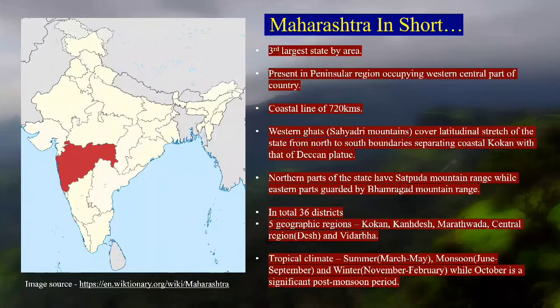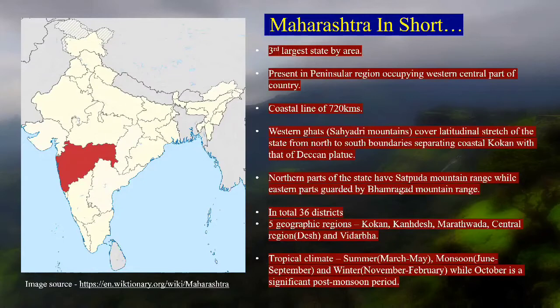Maharashtra has Western Ghats throughout its latitudinal stretch from north — from areas like Nashik or Palghar — till south like Sindhudurga and Kolhapur. We call this part the Sahyadri mountain ranges. In the north we have the Satpuda mountain ranges, a drier region but still with a lot of butterfly variety. In the east, towards Chhattisgarh, we have the Phamragad ranges. In total we have 36 districts and 5 geographic regions.